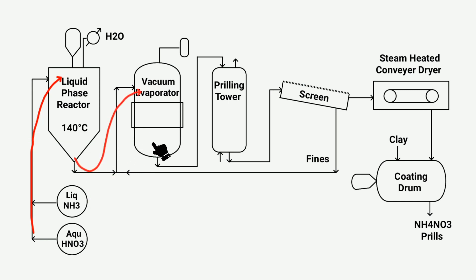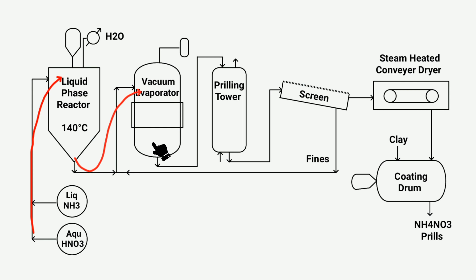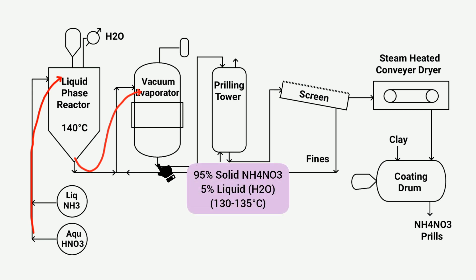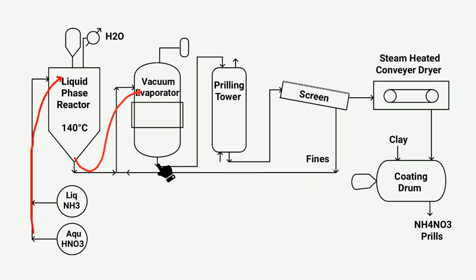The resulting salt solution is then transferred to a vacuum evaporator to increase the concentration of ammonium nitrate. The vacuum evaporator includes a vacuum ejector which generates a vacuum during the evaporation process. As evaporation occurs, the concentration of ammonium nitrate increases. The resulting product consists of approximately 95 percent solid ammonium nitrate and around 5 percent liquid at a temperature of approximately 130 degrees Celsius. The presence of 5 percent liquid is intentional to aid in the flow of solid ammonium nitrate through the pipeline.